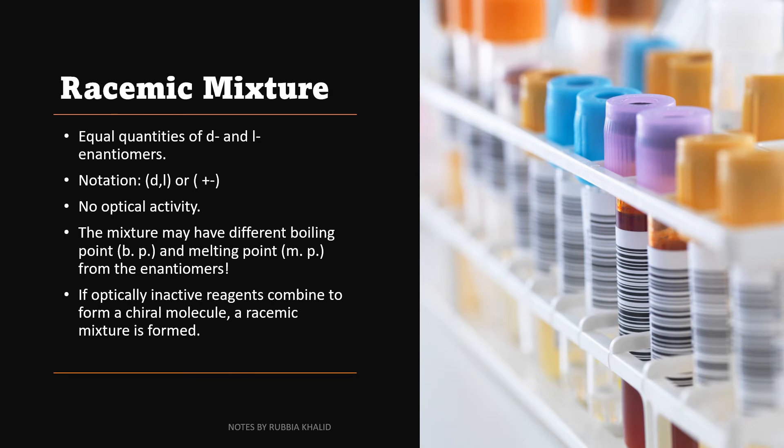Racemic mixture includes contain equal quantities of D and L enantiomer. It can be shown in these two types of notation which is D, dextral rotatory or levo rotatory or plus or minus. There is no optical activity in racemic mixture. The mixture may have different boiling point and melting point from enantiomers. If optically inactive reagents combine to form a chiral molecule, a racemic mixture is formed.